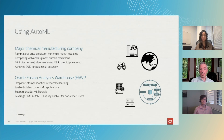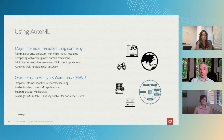First, we'll consider a major APAC chemical manufacturing company's use case. Their goal is to predict the prices of raw materials with a multi-month lead time. The ML results are compared with human predictions, and their goal is to minimize human judgment bias using machine learning to predict price trends. With AutoML, they were able to achieve 90% forecast result accuracy.